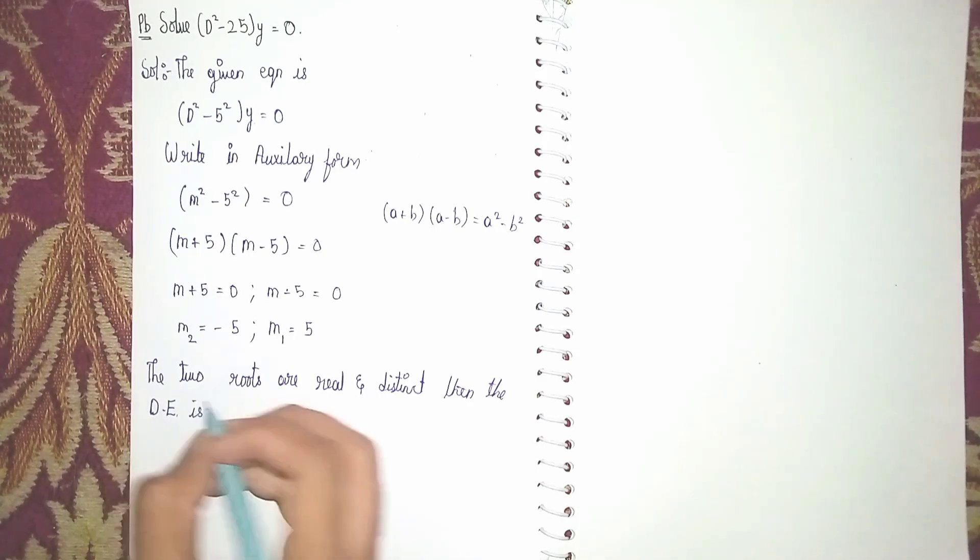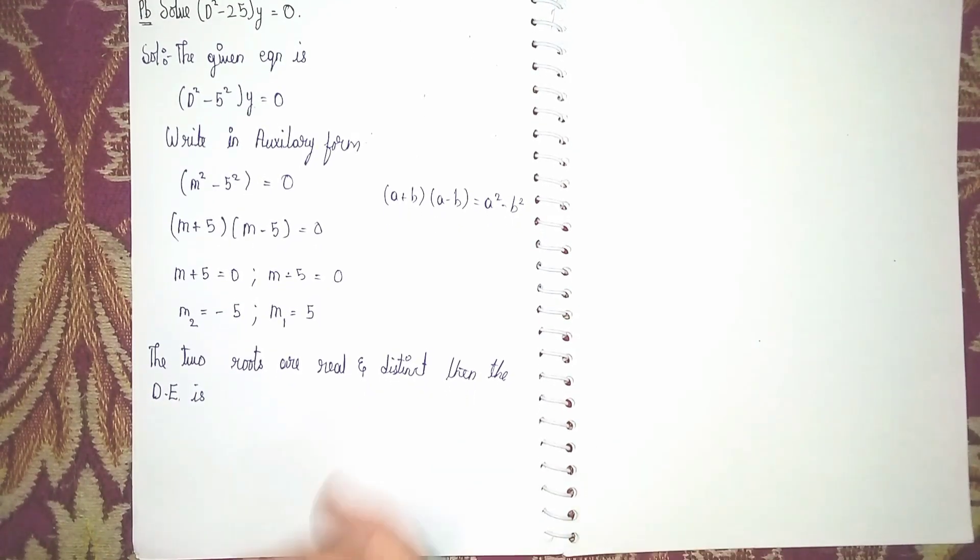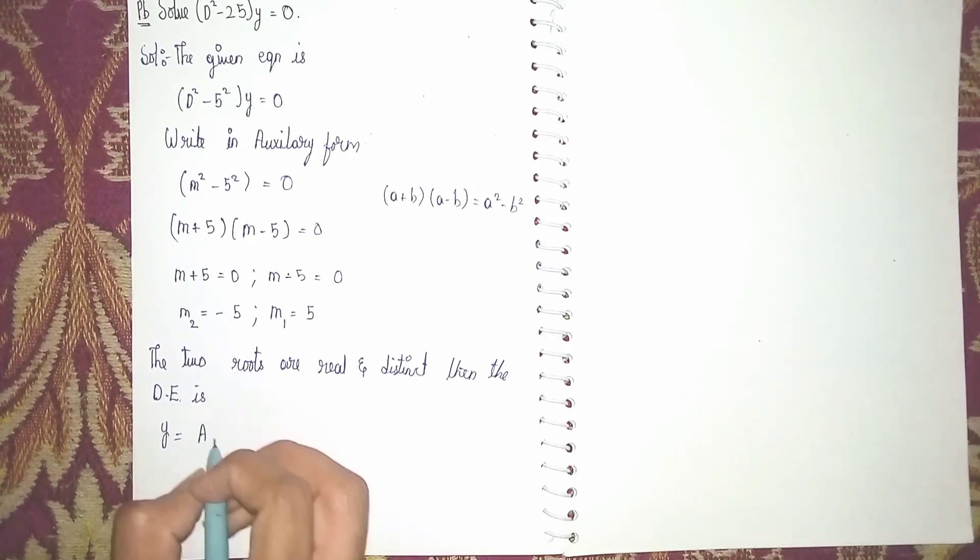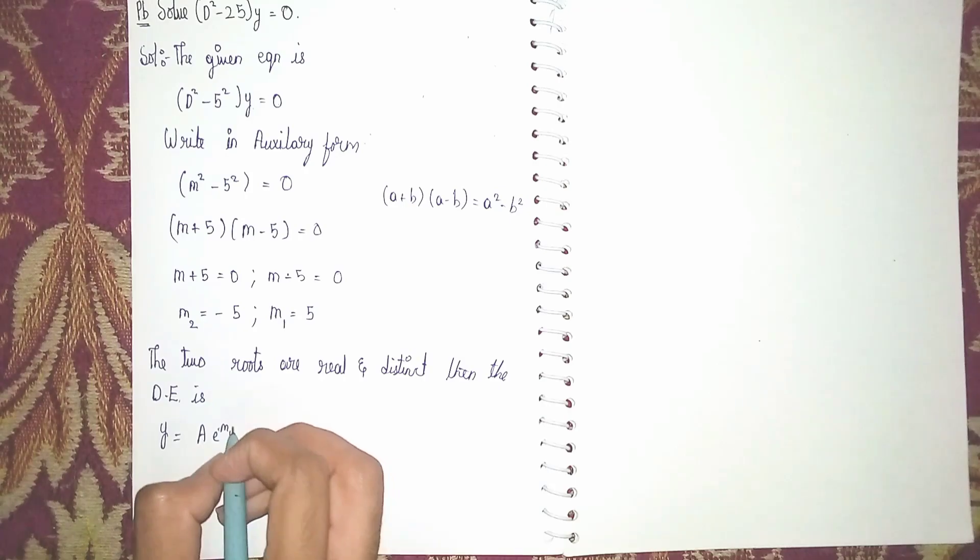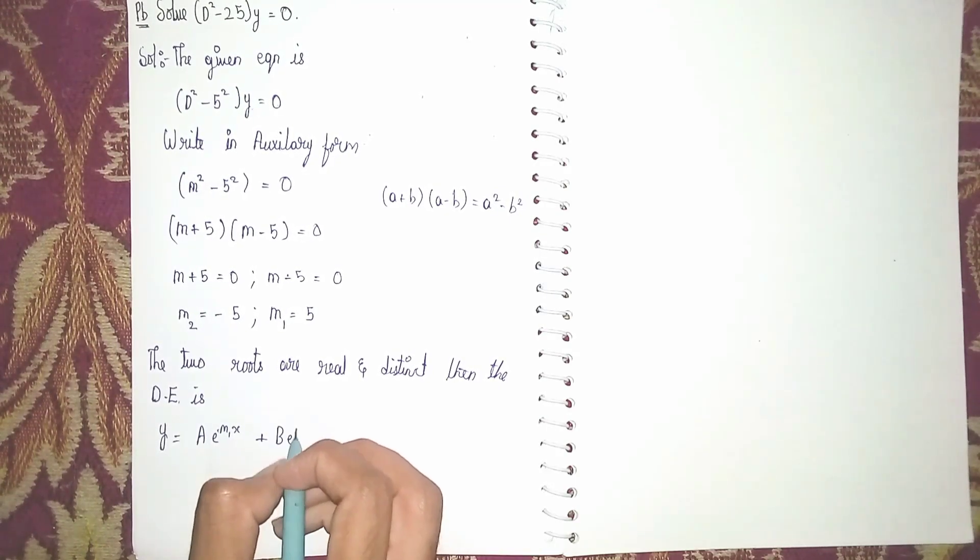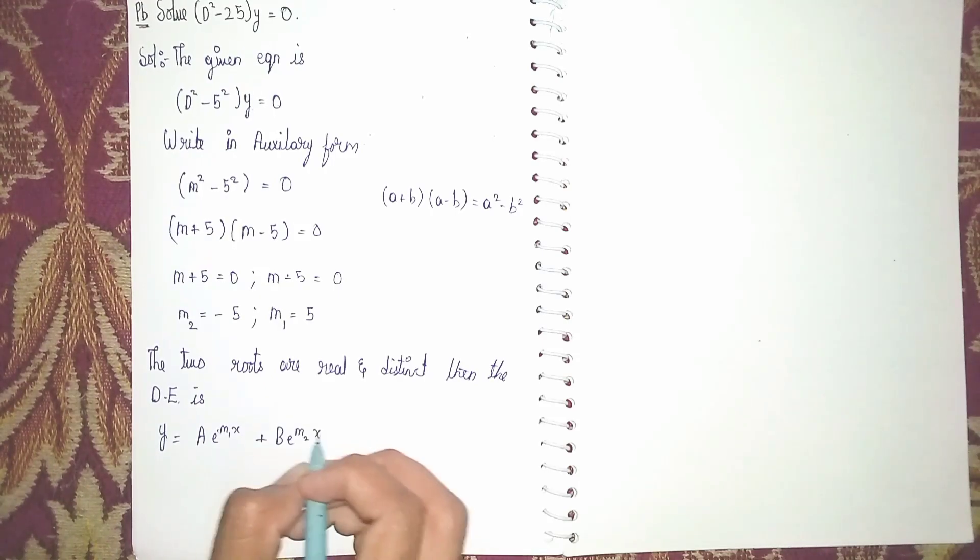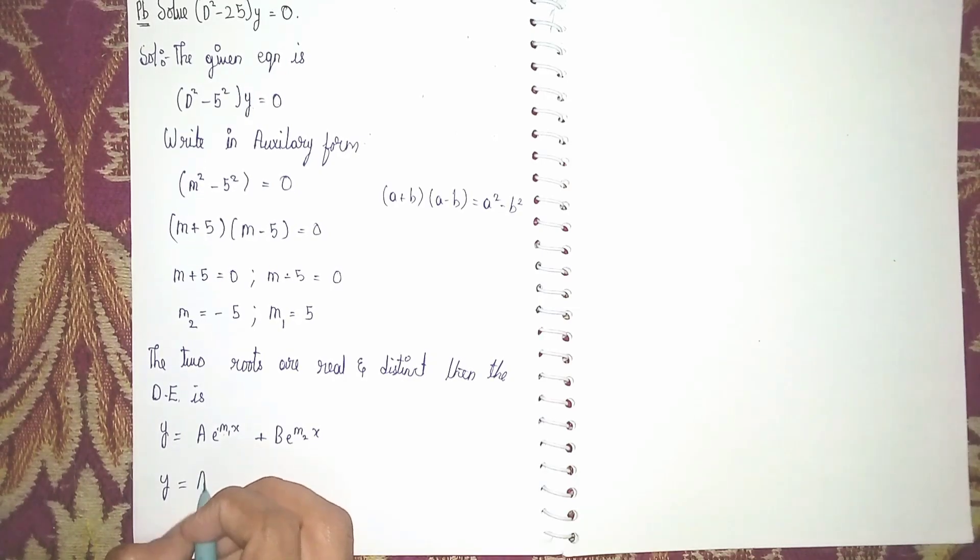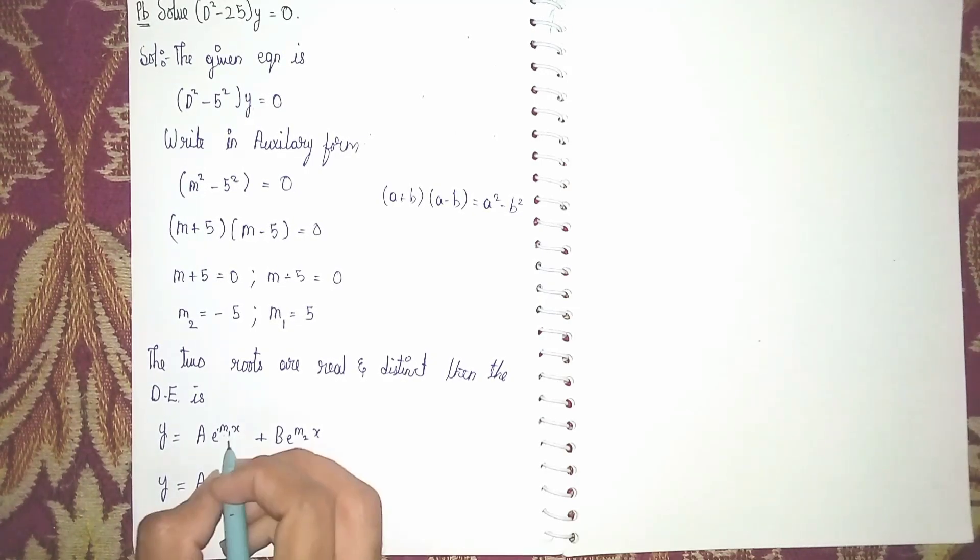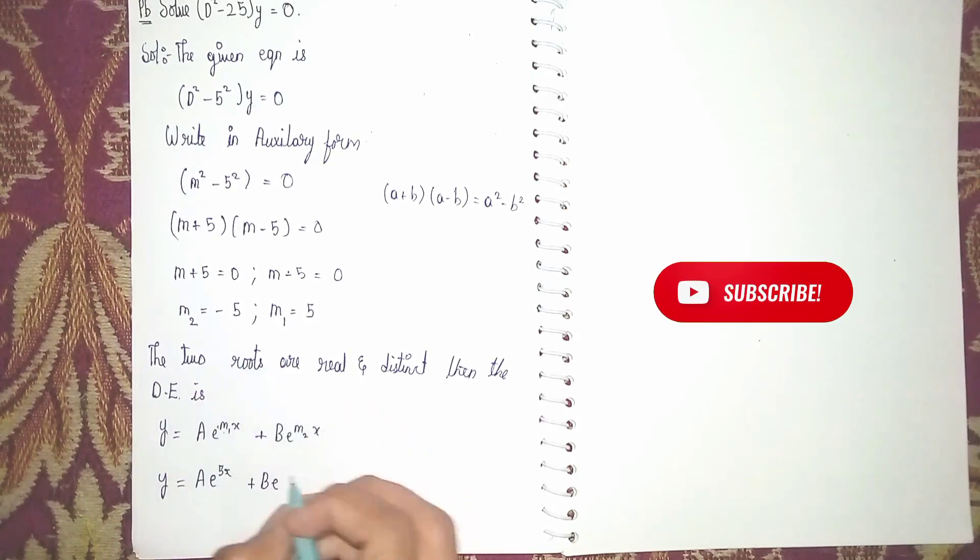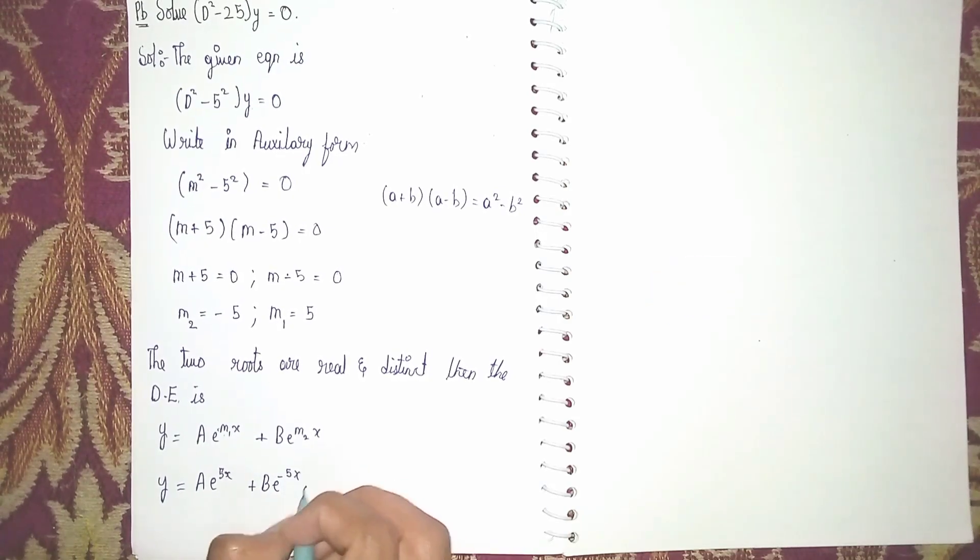Substitute the value of m1 and m2. Our y is equal to a into e power, what is m1, 5x, plus b into e power, what is m2, minus 5x. This is our answer. Thanks for watching.